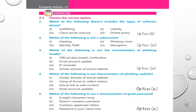Exercise — Choose the correct option. First: Which of the following does not include a type of software piracy? Options: soft lifting, liability, client-server overuse, or online piracy. The correct option is liability. Second: Which of the following is not a cybercrime? Options: hacking, phishing, identity theft, or decryption. The correct option is decryption.